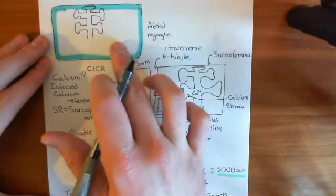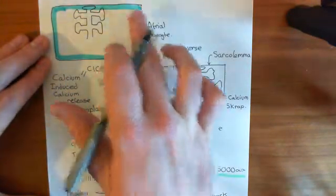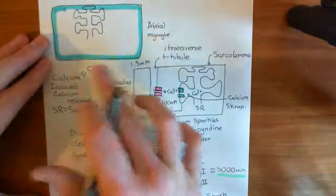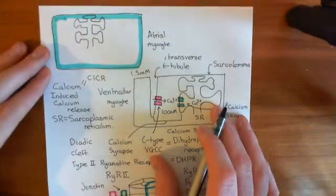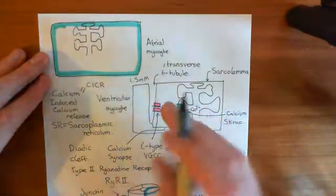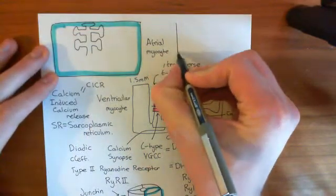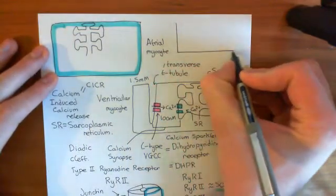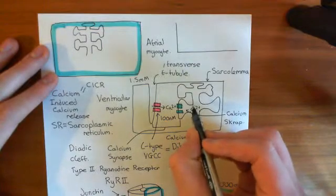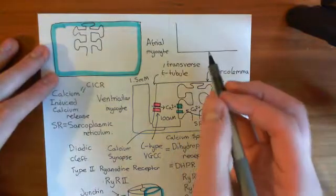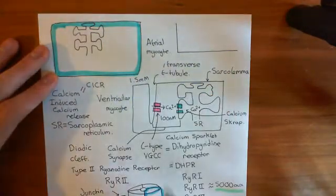In atrial myocytes, you don't get that, at least not at rest. You just get the calcium going up in the periphery. In either case, let us plot the calcium signal. Let's start with the ventricular myocyte, because it is easier, and then we'll discuss the atrial myocyte.